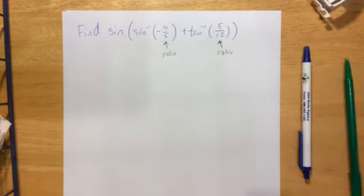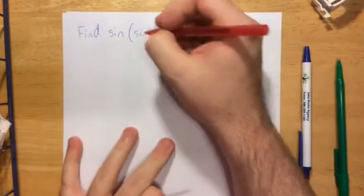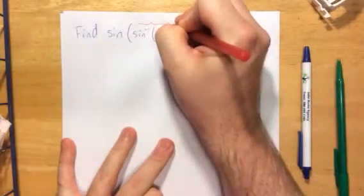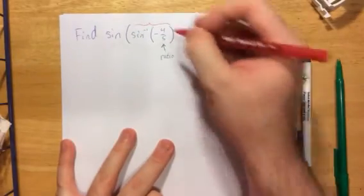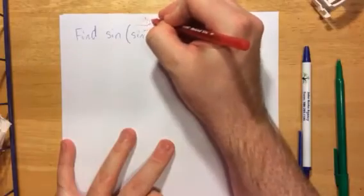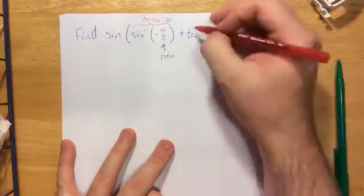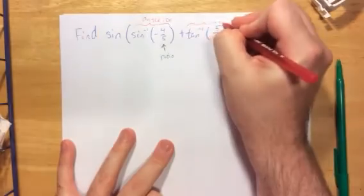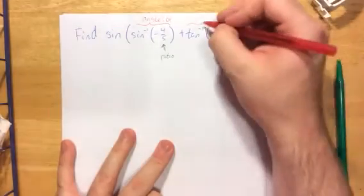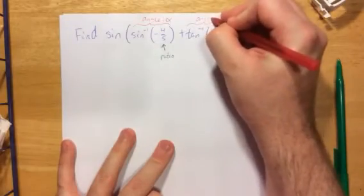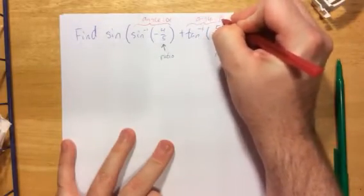I'll switch over to red here. That means that this whole quantity, this inverse sine of negative 4 fifths, that is going to be an angle. And I'm going to refer to this first angle as the angle alpha. Now for this guy over here, inverse tangent of 5 twelfths, we input a ratio, we output another angle, and this guy I'm going to refer to this as beta.